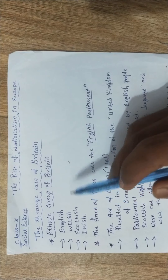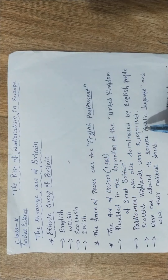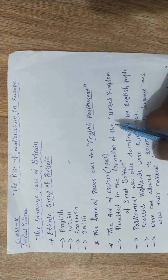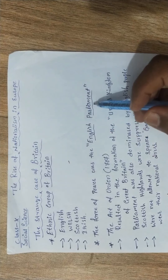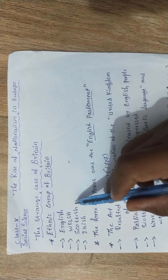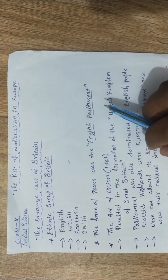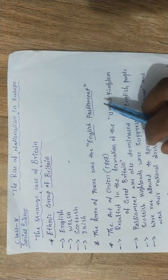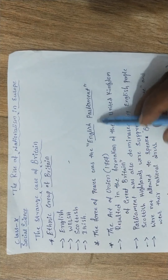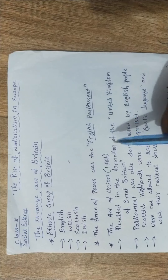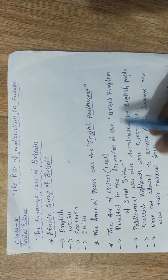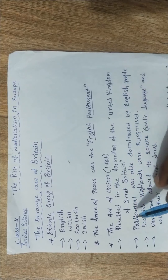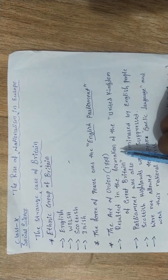First and foremost, the English went to the Scottish people and said, 'Why can't we work together and make a unified country? We will give you a placement in the English Parliament.' When Scottish people heard they would get a seat in the powerful English Parliament, they agreed. The Act of Union 1707 came into law, resulting in the formation of the United Kingdom of Great Britain.